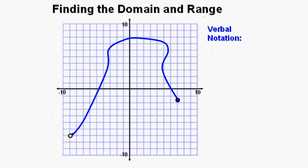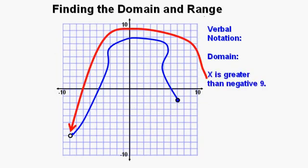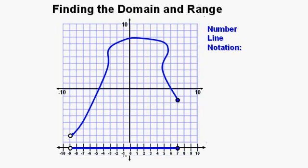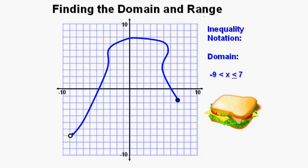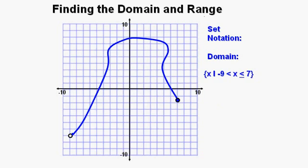Let's look at this relation. Verbally, we have x is greater than negative 9 because there's an open point at negative 9, and x is less than or equal to 7. On the number line for domain, we see the open point at negative 9, the closed point at positive 7, and the interval between filled in. For the inequality: x is greater than negative 9 and less than or equal to 7 — the x is sandwiched between the negative 9 and the 7. For set notation: x such that x is greater than negative 9 and less than or equal to 7, very similar to inequality notation.